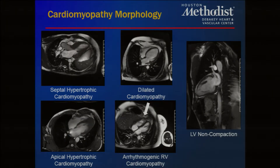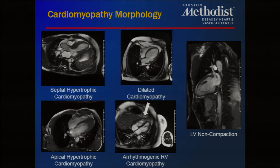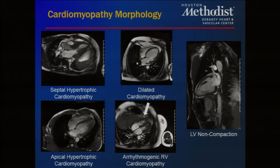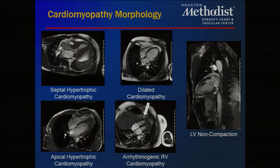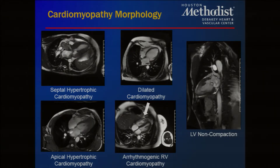Cardiac MRI allows us to look at hypertrophic cardiomyopathy with asymmetric septal hypertrophy, showing systolic anterior motion of the mitral valve with the anterior leaflet being pulled forward, leading to a posterior eccentric mitral regurgitant jet and dynamic LVOT obstruction. We can also assess apical hypertrophy, dilated cardiomyopathy, arrhythmogenic RV cardiomyopathy showing akinesis and dyskinesis of the RV apex, and LV noncompaction by visualizing trabeculations.